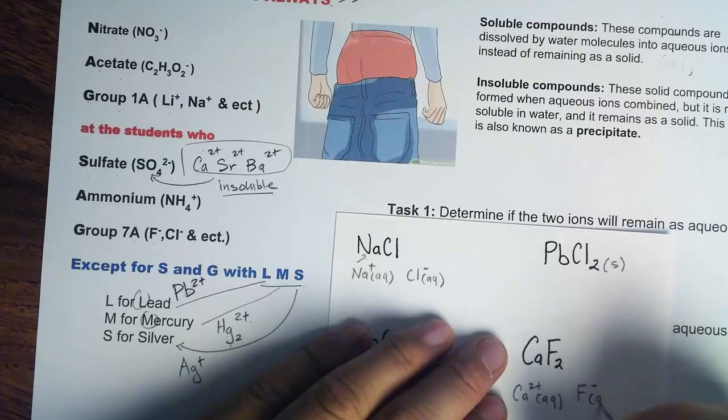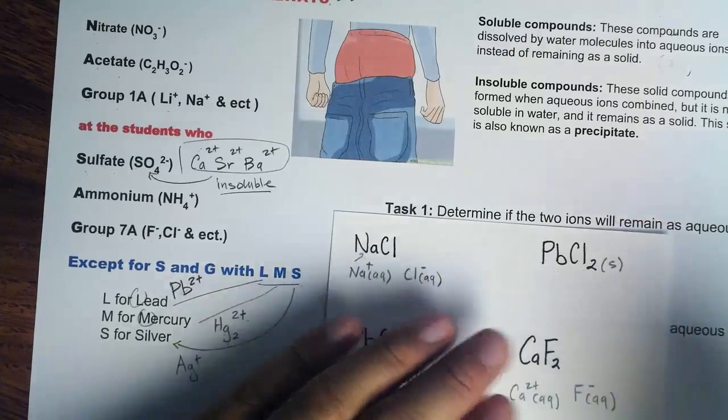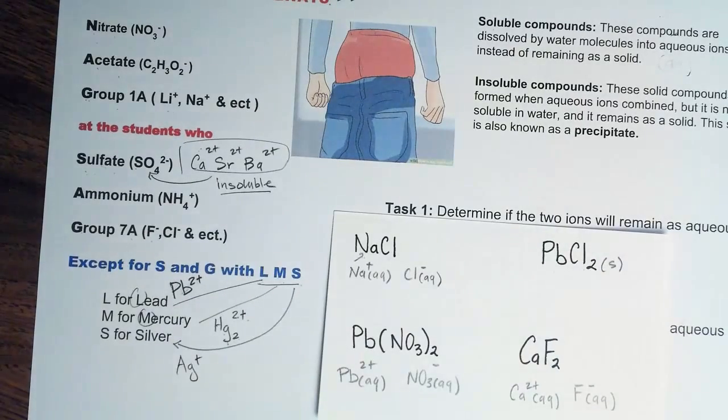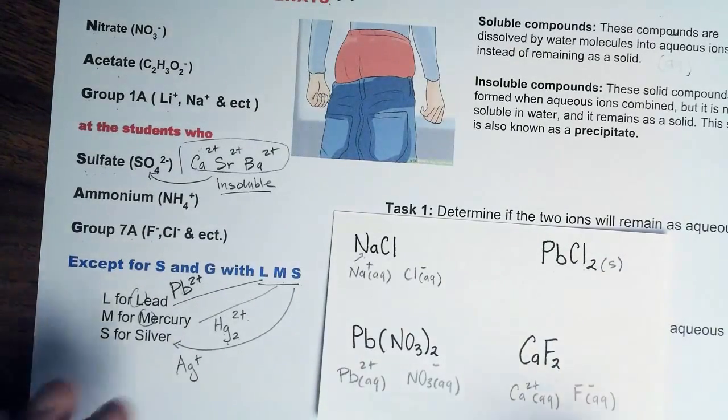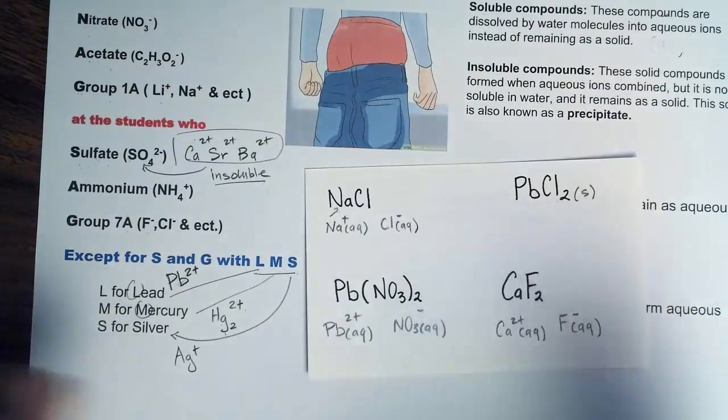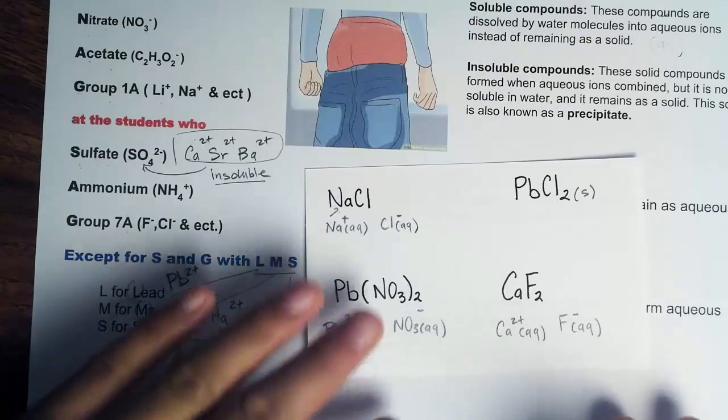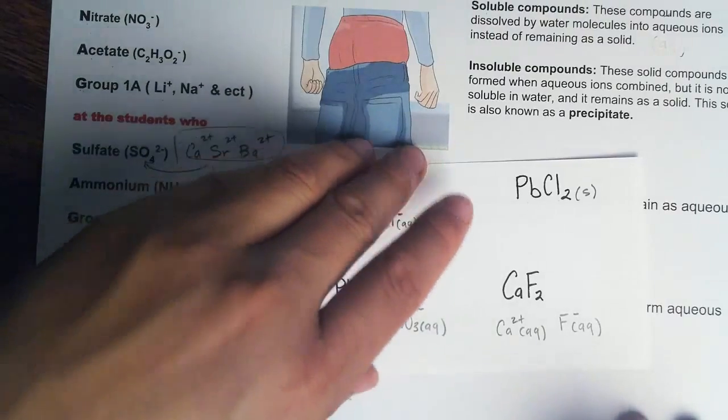So calcium fluoride will be dissolved into calcium ions in aqueous form and fluorine ions in aqueous form as well. That's how we determine if a compound is going to be soluble or insoluble.